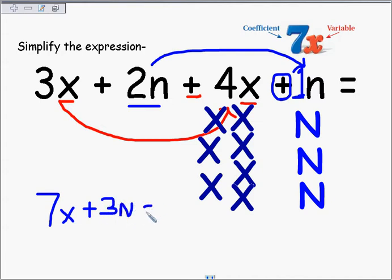So I've combined my like terms, and then the next confusion is, well, I couldn't solve it. They didn't ask me to solve. They're saying, simplify it. Just combine the like terms. So, 7x plus 3n. 3x plus 4x is 7x. 2n plus 1 more n is 3n equals... You're done. It's easier than you thought it was.